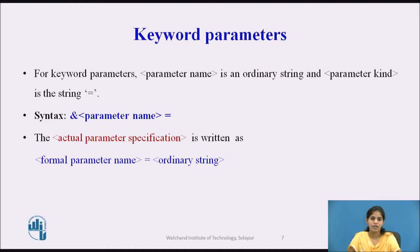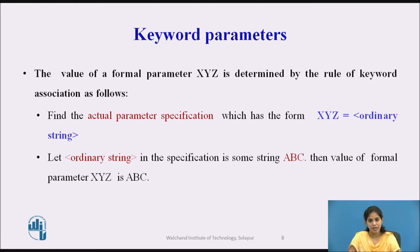Next we see keyword parameters. For keyword parameters, the parameter name is an ordinary string and the parameter kind is the string '='. The syntax is: &PARAMETER_NAME=. The actual parameter specification in a keyword parameter is written as: FORMAL_PARAMETER_NAME=ORDINARY_STRING. The value of the formal parameter XYZ is determined by finding the actual parameter specification of the form XYZ=some string; that string becomes the value of XYZ.